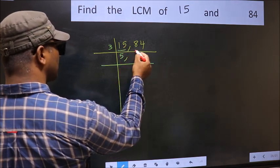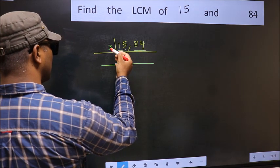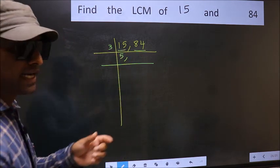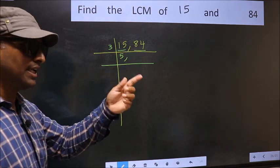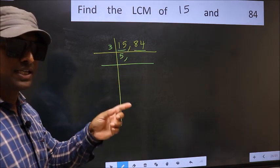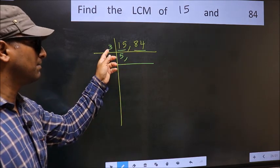The other number 84. To check whether 84 is divisible by 3 or not, add the digits: 8 plus 4. We get 12, and 12 is divisible by 3, so this number is also divisible by 3.